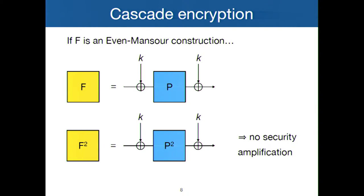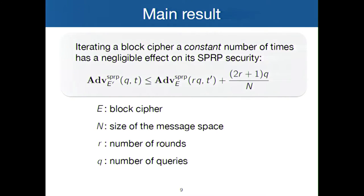So we don't hope to prove security amplification. What we're going to show is much more modest: there is basically no loss. There is very little loss of security when you do this construction. Heuristically, it should make many attacks more difficult. Theoretically, what we can show is that the security loss is very small. Here we think of R, the number of rounds, as being constant. N is the message space and Q is the number of queries. The security loss is proportional to the fraction of the message space that you have queried.